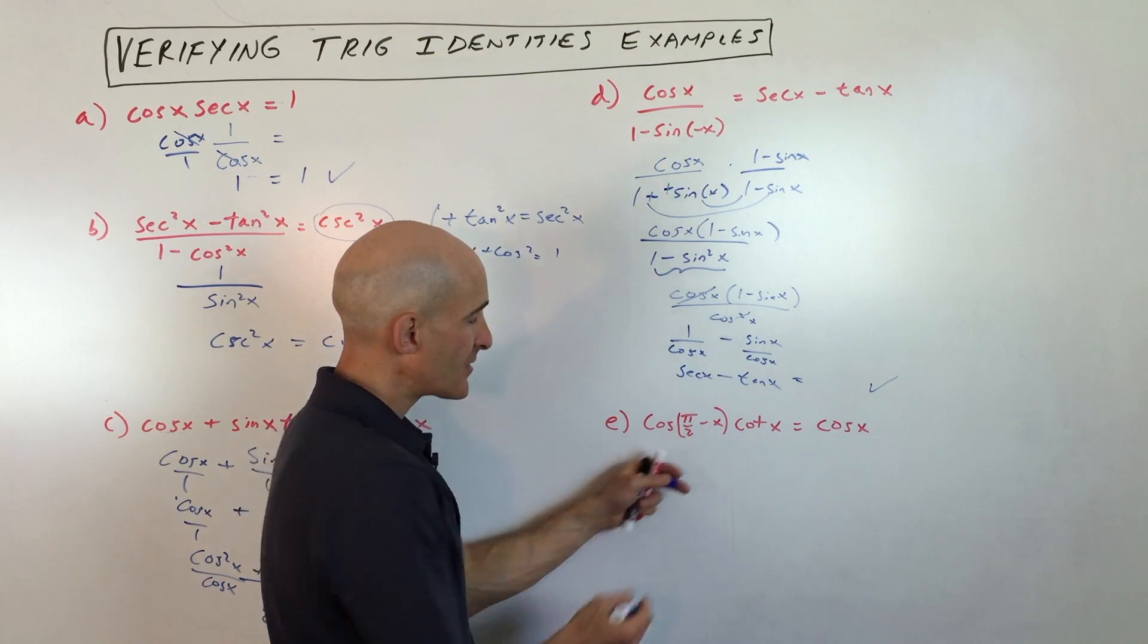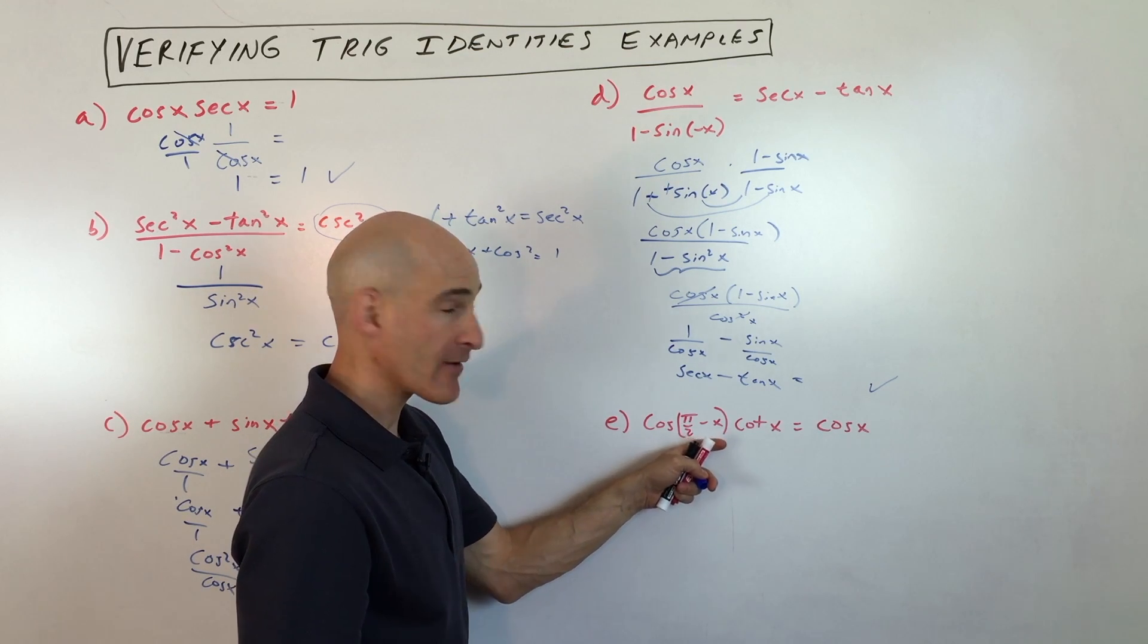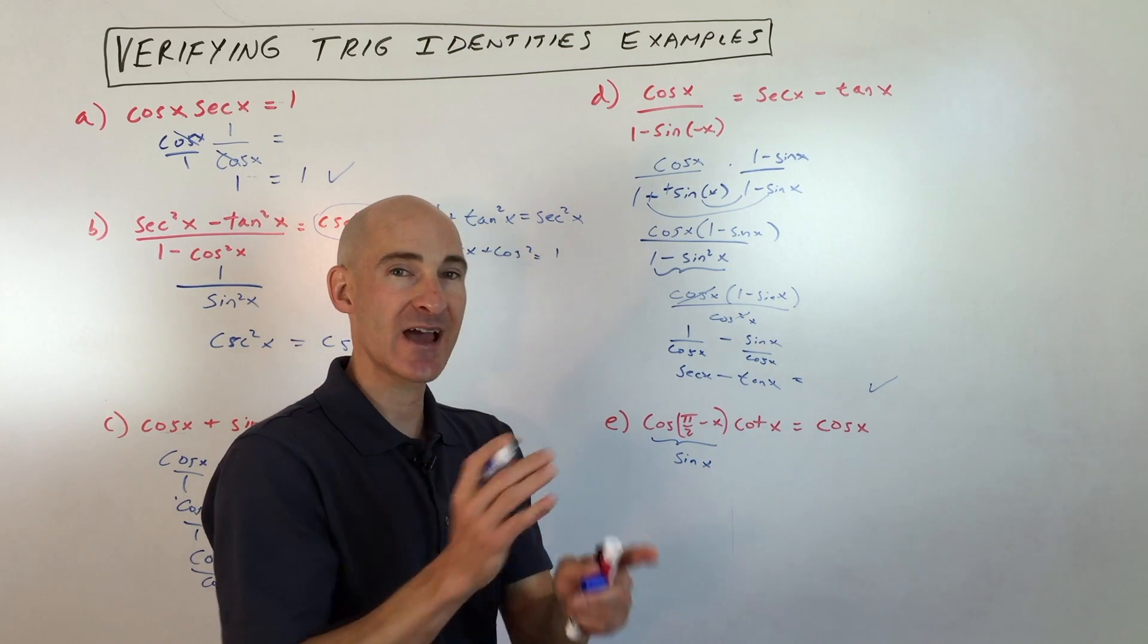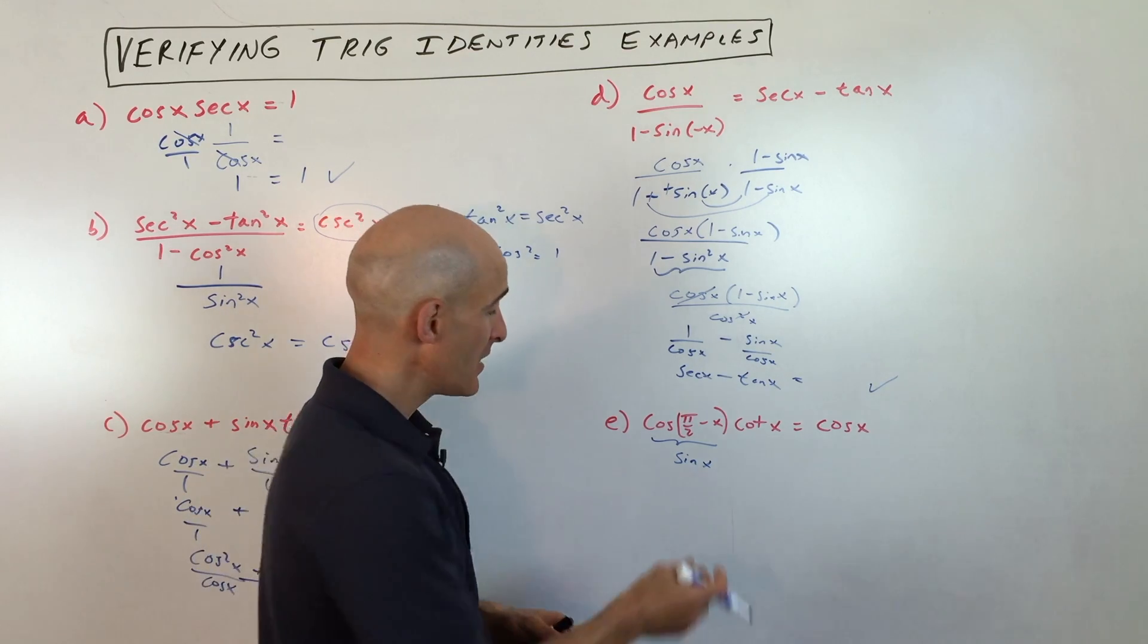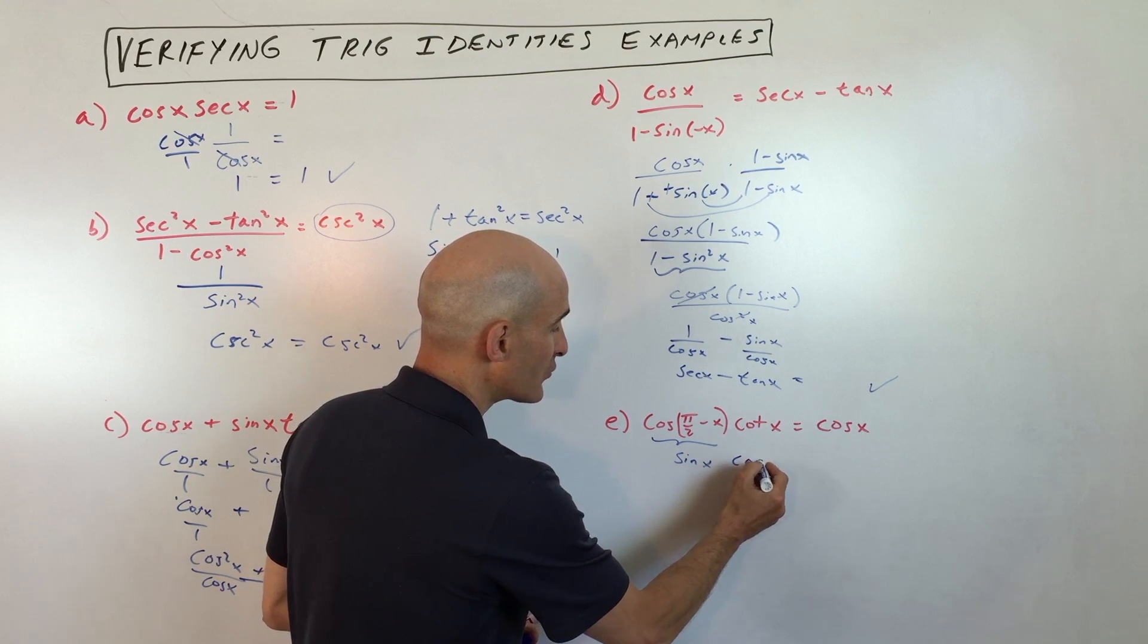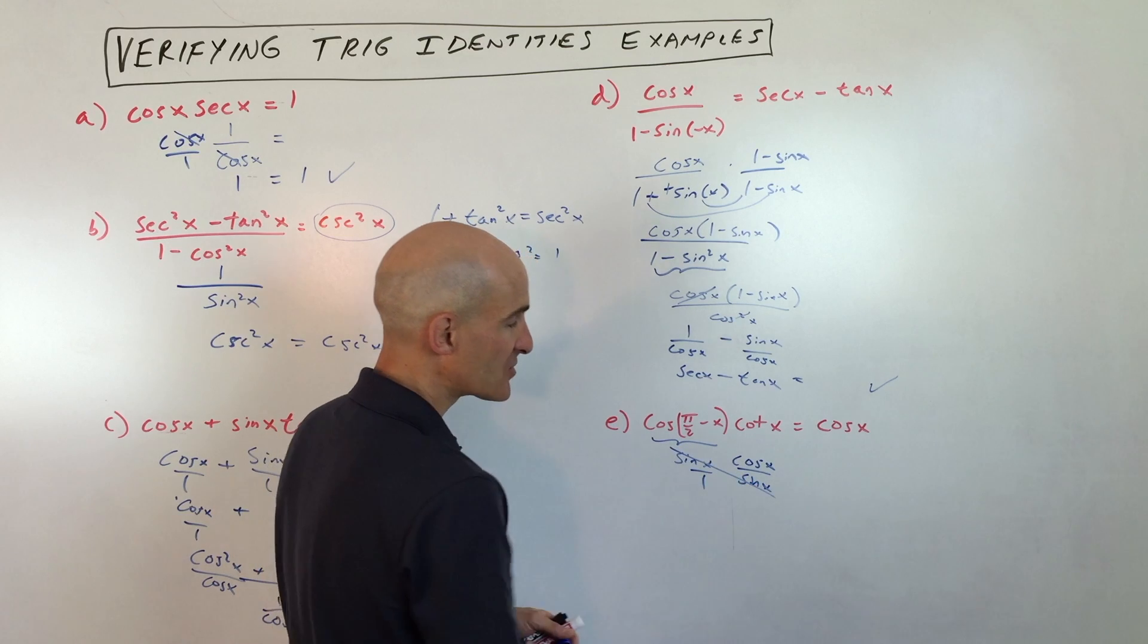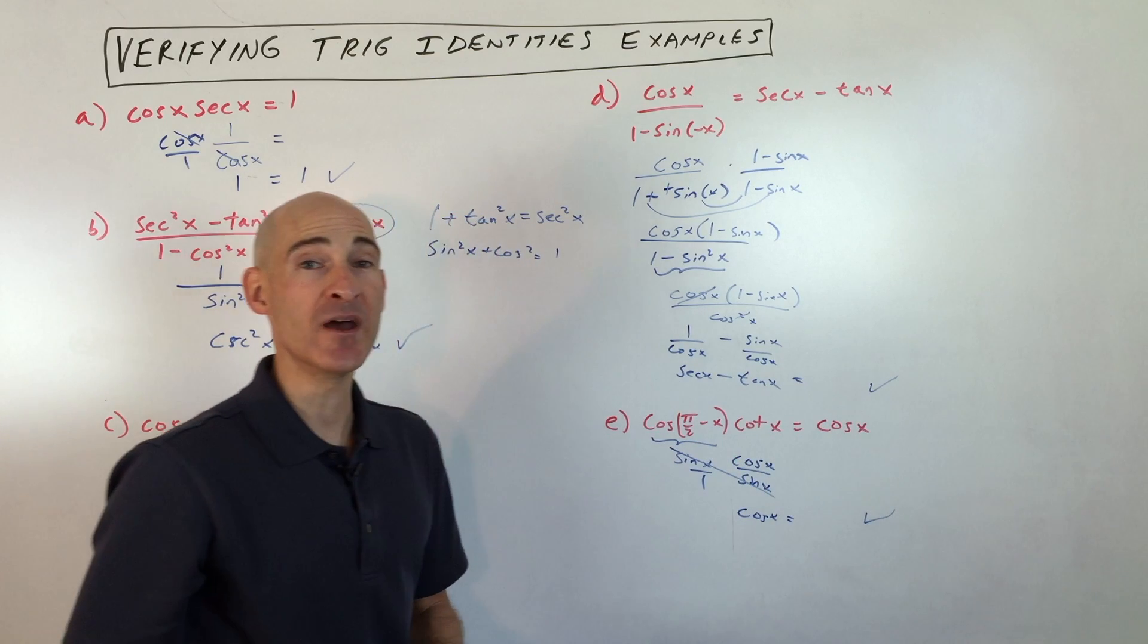This one here we haven't talked about yet. These are the co-functions. Cosine of 90 minus x, or pi over 2 minus x, this is equal to the sine of x. So cosine and sine are co-functions. Tangent and cotangent. Secant and cosecant. So this is equivalent to sine of x. Cotangent of x is equal to cosine over sine. And you can see that the sines are going to cancel. And so we have cosine x equals cosine x. And we proved it.